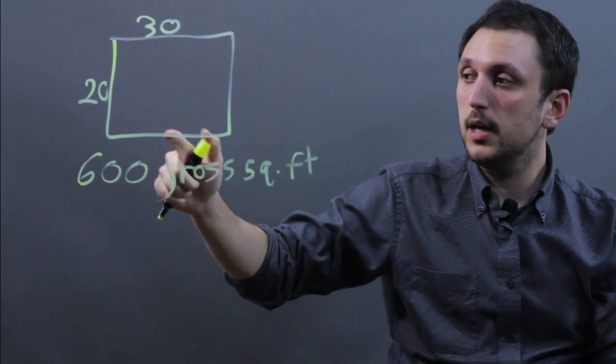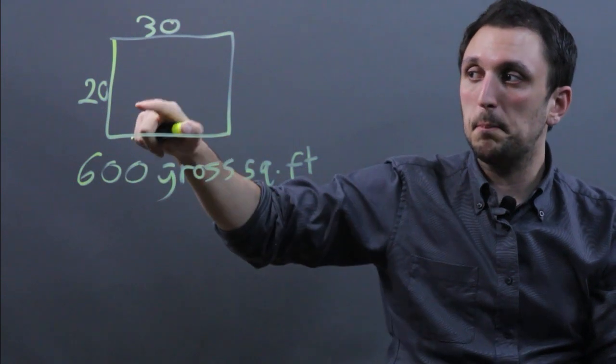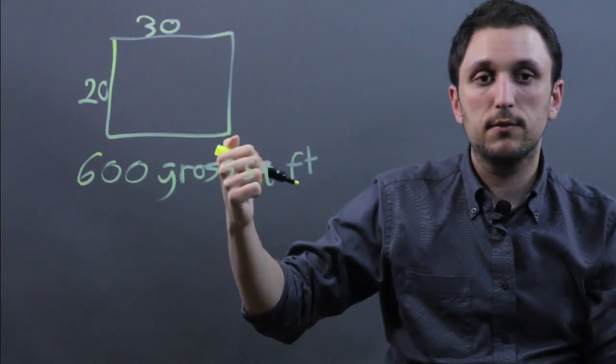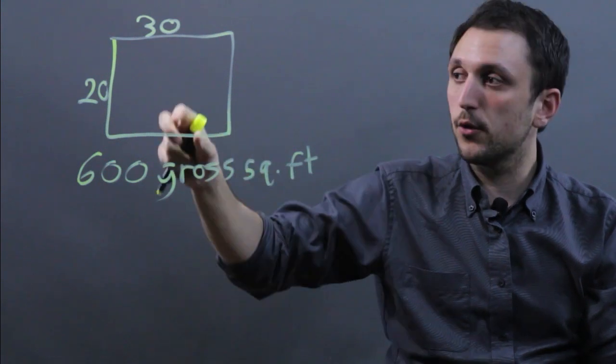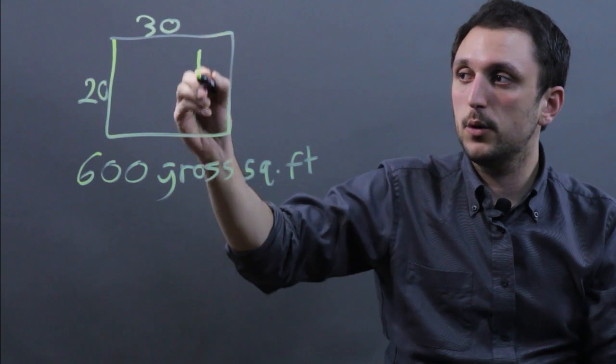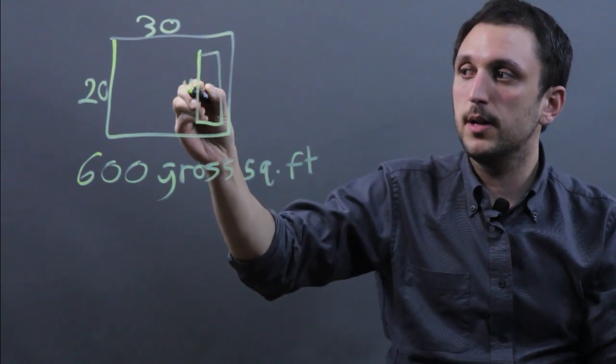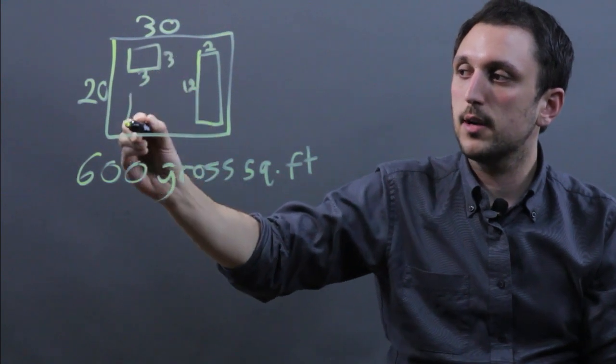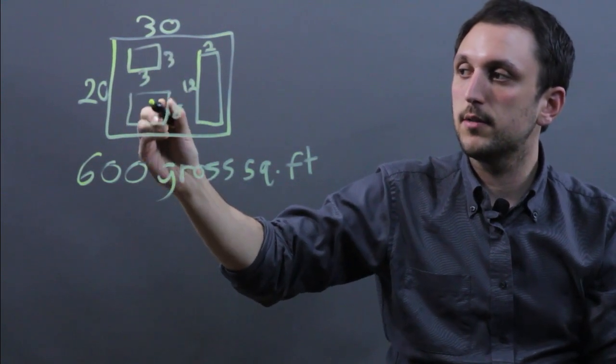Now, net square feet is the gross square feet minus certain things like hallways and elevator shafts and stairwells and any other large piece of machinery that takes up space in the building. So, let's say we have a hallway that's 12 by 2, an elevator shaft that's 3 by 3, and a stairwell that's 8 by 7.